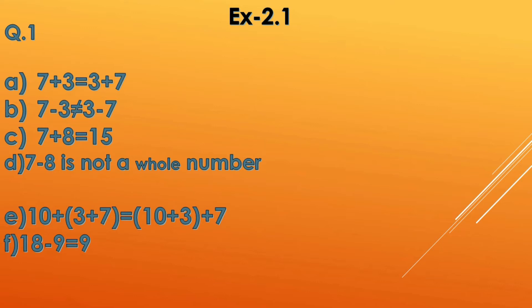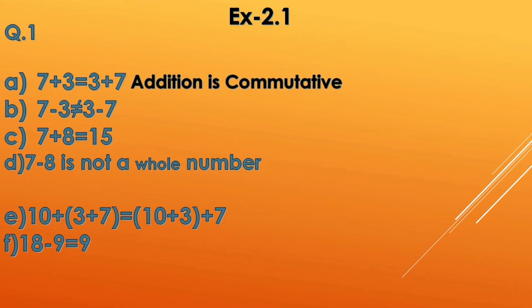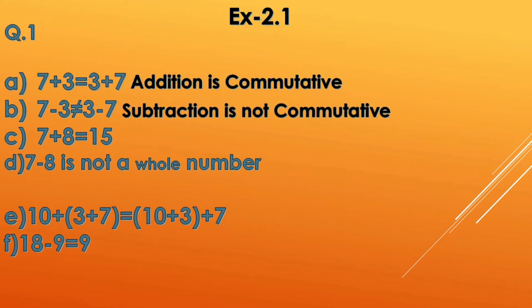Now let's start Exercise 2.1. Statements have been given and by reading them we need to identify the property. Question 1a shows changing the order, so addition is commutative. In 1b, for subtraction if you change the order the answer is not equal, so subtraction is not commutative.